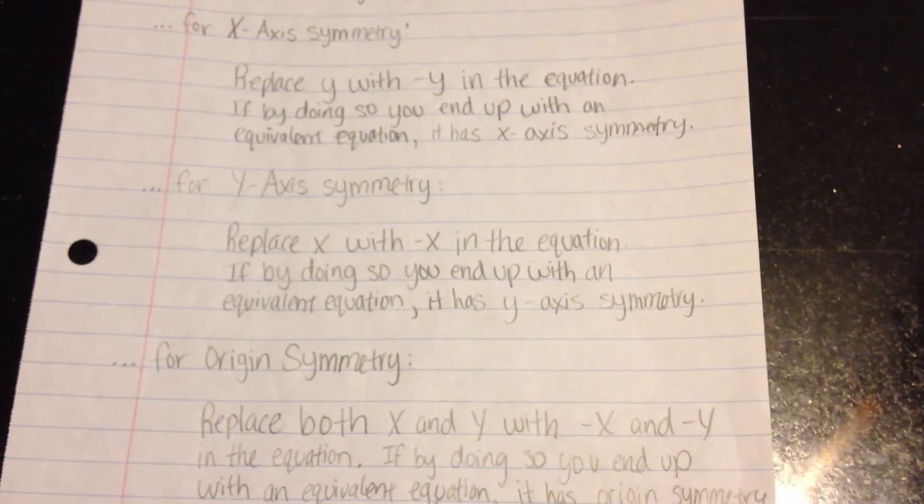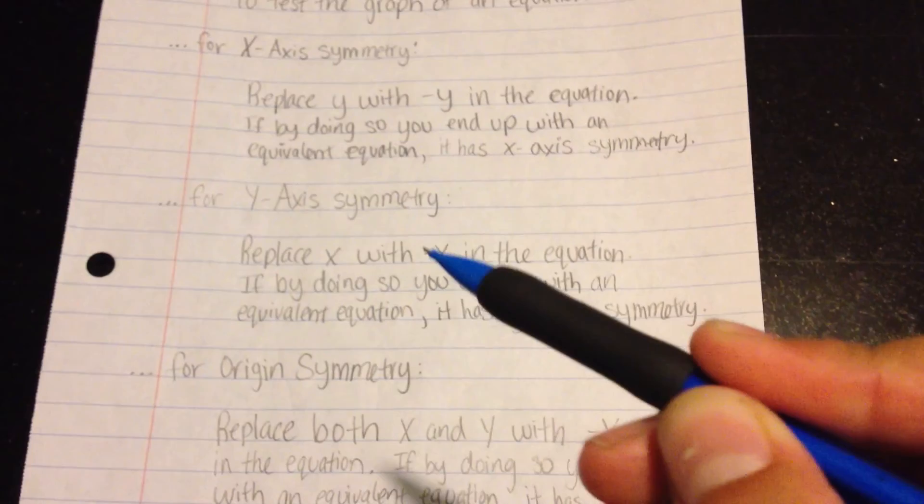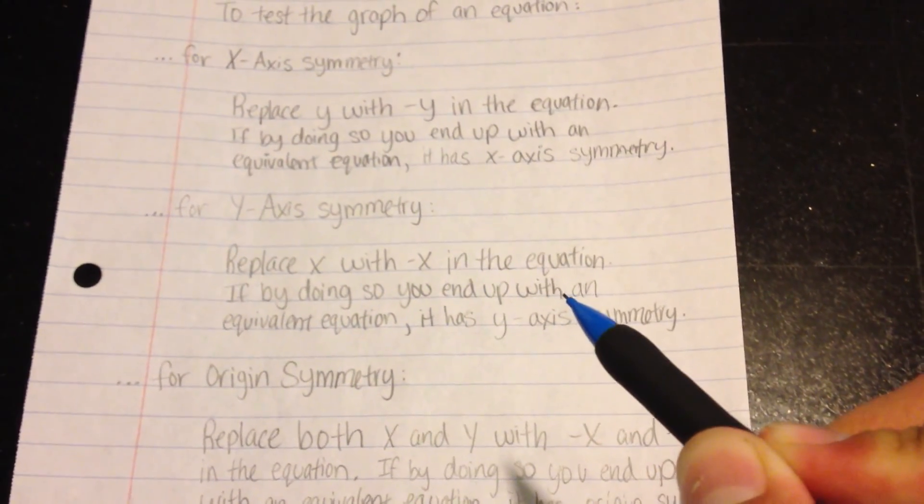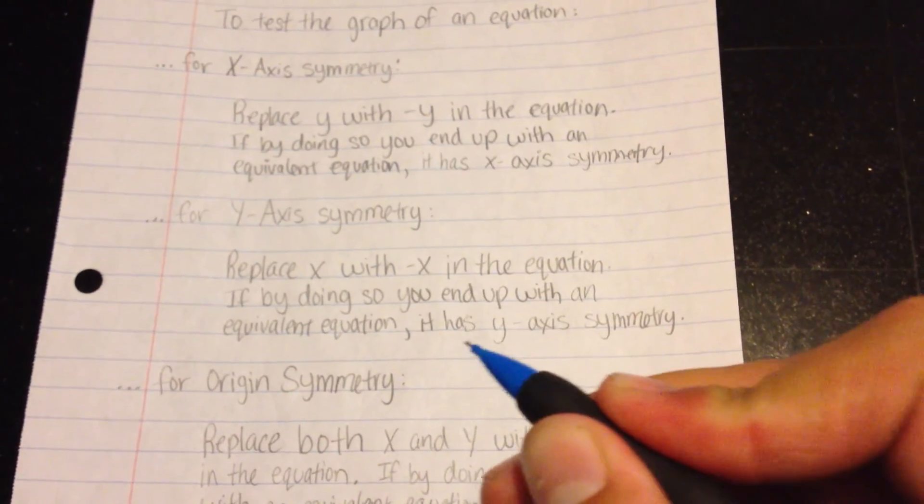For y-axis symmetry, what you need to do is replace any x's with negative x in the equation. And if by doing so, you end up with the same equation, it has y-axis symmetry.